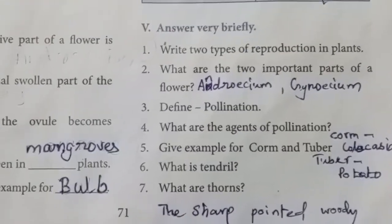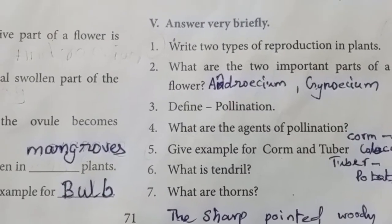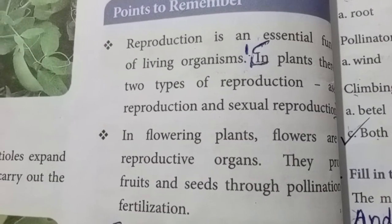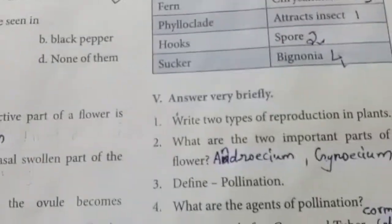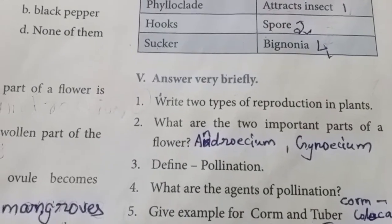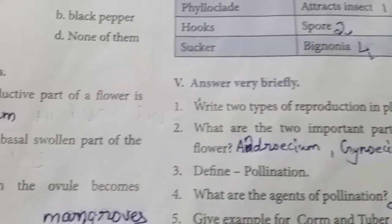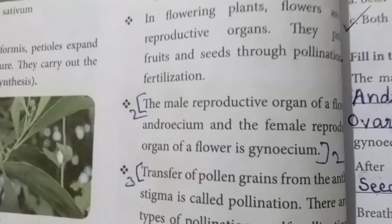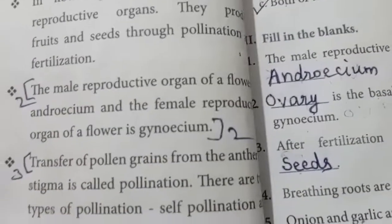Short answer: Write two types of reproduction in plants. The answer is asexual reproduction and sexual reproduction. What are the two important parts of the flower? The answer is androecium and gynoecium. The male reproductive organ of the flower is the androecium and the female reproductive organ is the gynoecium.